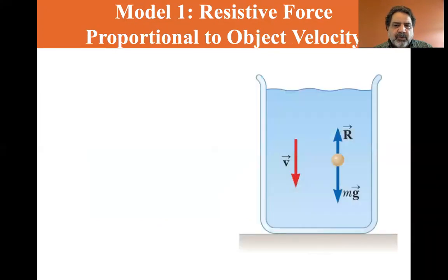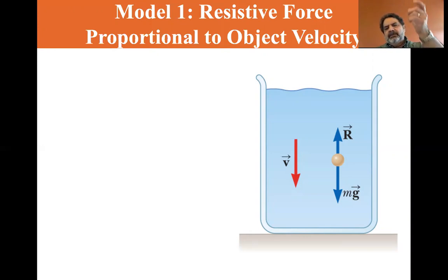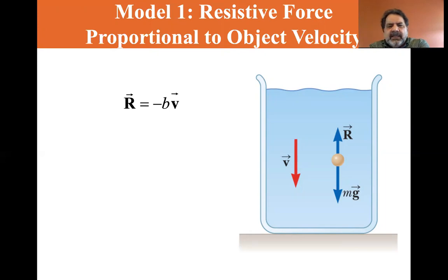For the first model, consider a small ball bearing or pearl dropped in a viscous fluid — like a pearl dropped in shampoo to show how thick it is. As the pearl drops, there's a gravitational force pulling it down and a resistive force pulling it up. The resistance equals minus b times the velocity, where b is a proportionality constant, so the resistive force increases directly as velocity increases.